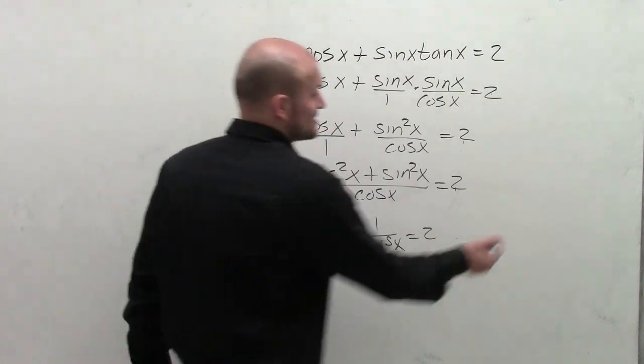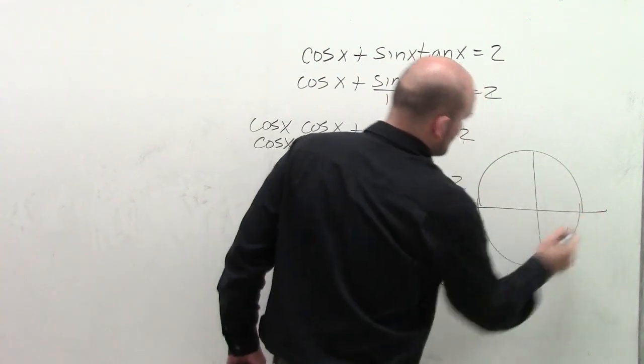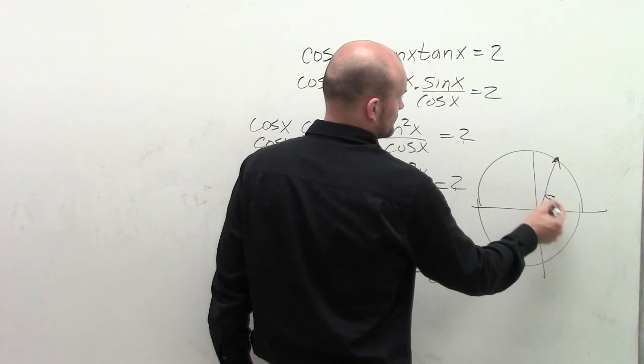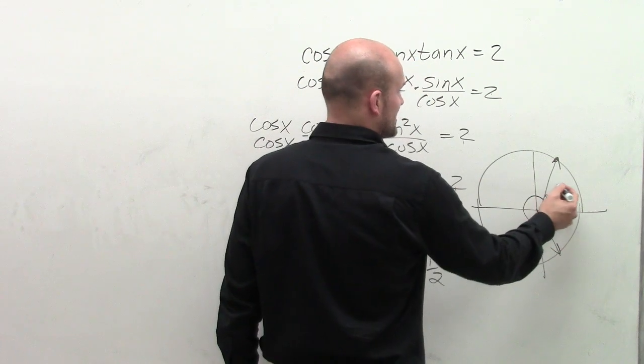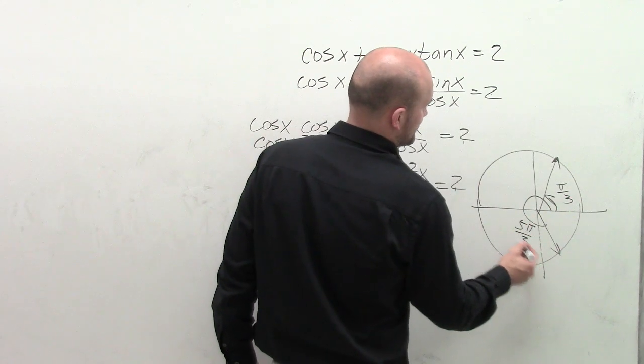So now to find the values of when cosine x equals 1 half, I go ahead and take a look at my nice, lovely unit circle. And I say cosine of x equals 1 half at this angle and at that angle. Well, this angle is pi thirds and this angle is 5 pi over 3.